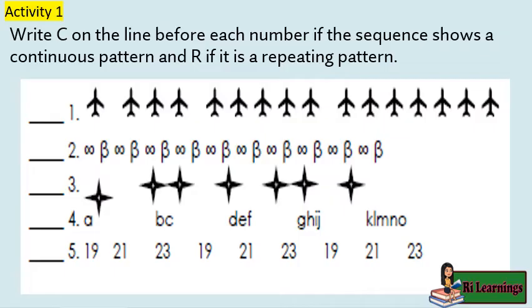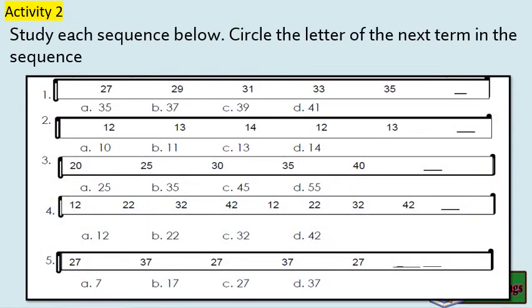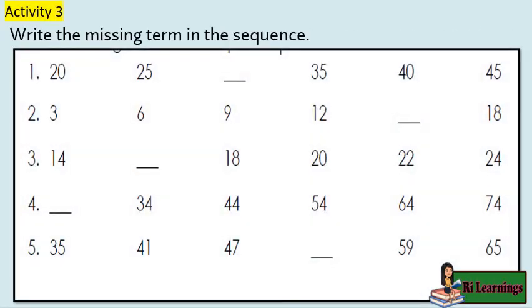Activity 1: Write C on the line before each number if the sequence shows a continuous pattern and R if it is a repeating pattern. Activity 2: Study each sequence below and circle the letter of the next term in the sequence. Activity 3: Write the missing term in the sequence.